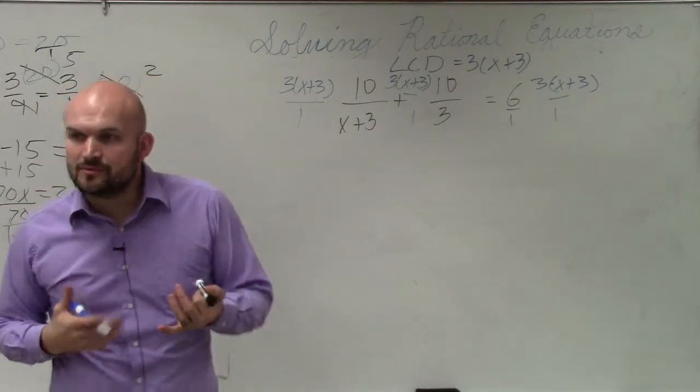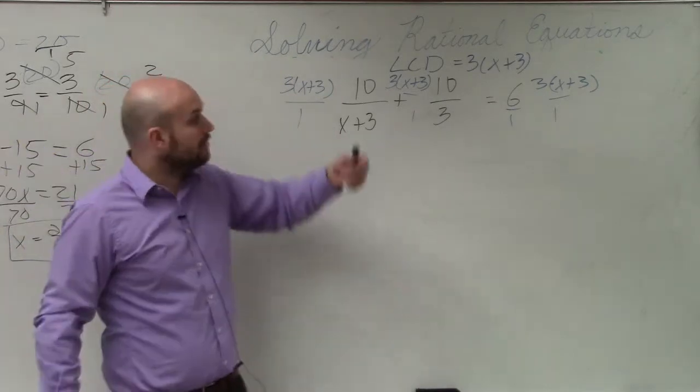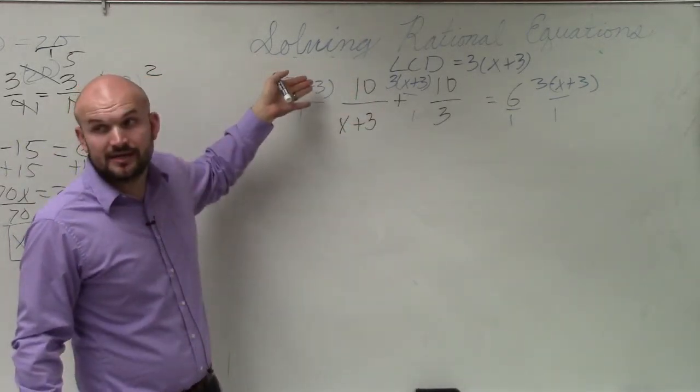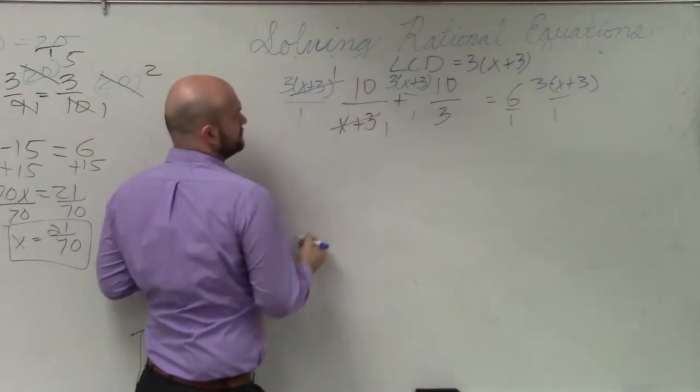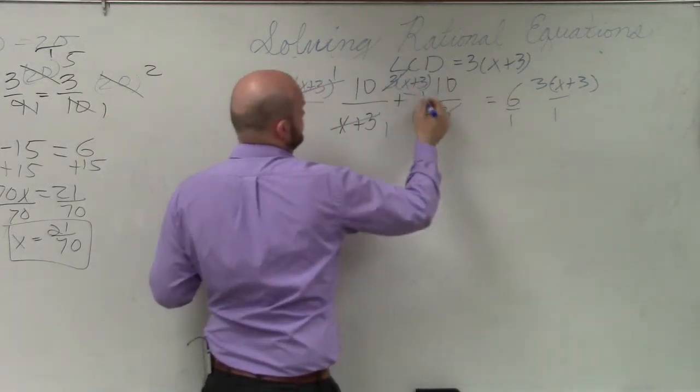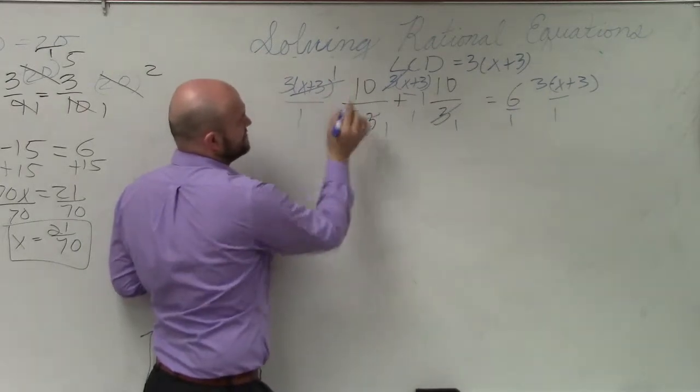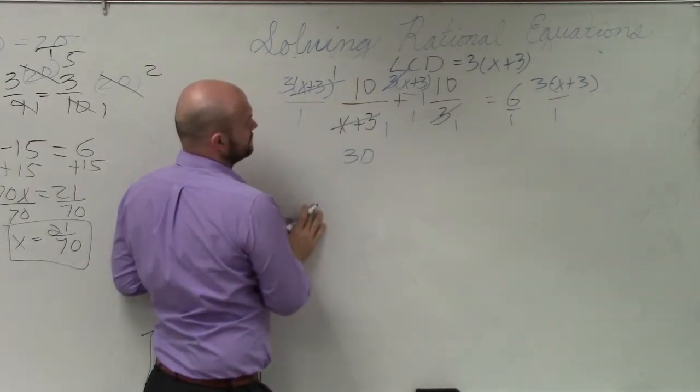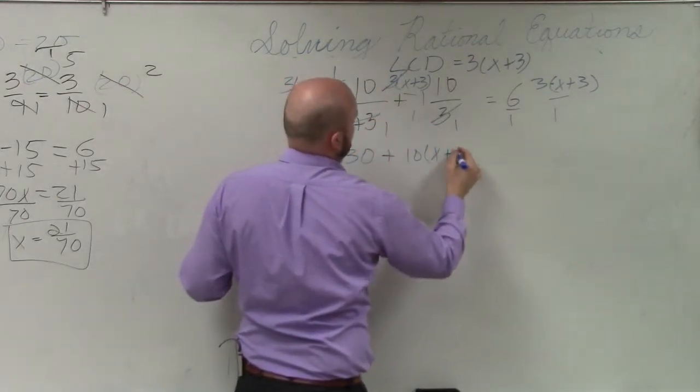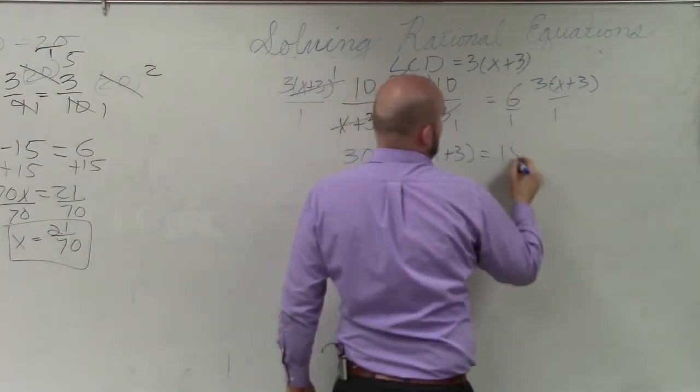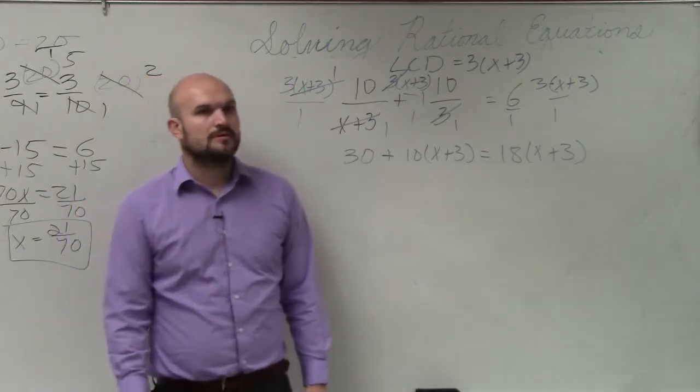So now what you guys notice is when we multiply these, we kind of go back to our simplifying days, what we did over here. Whenever we notice that something is the same in the denominator as in the numerator, that divides to 1. So what I have here is 3 times 10 which is 30. x plus 3 times 10 equals 6 times 3 which is 18 times x plus 3.